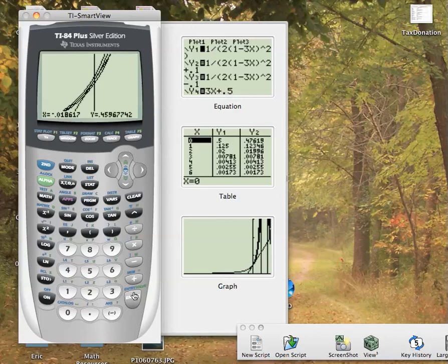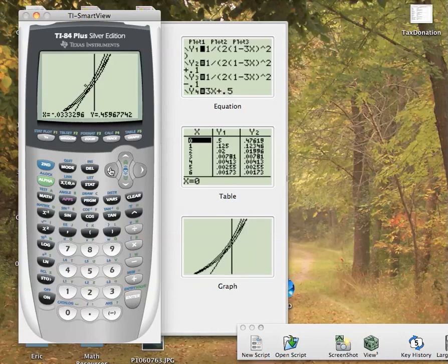So I'm still in zoom box mode, so I don't even have to hit zoom box again. I'm just going to draw another box. This is the part that is most interesting. You can see the intersection right here with the line and the lower curve, and right there the line and the upper curve. So I want to get all of that in.